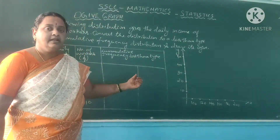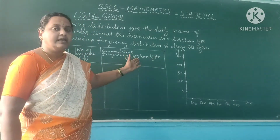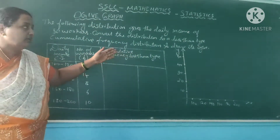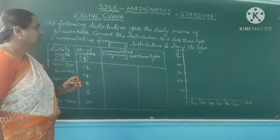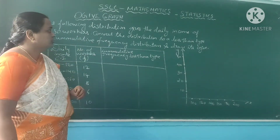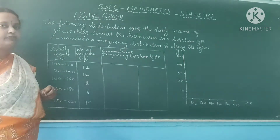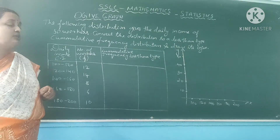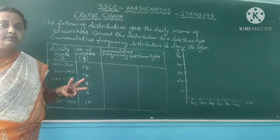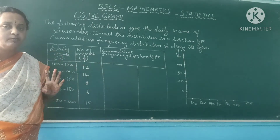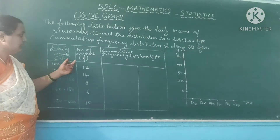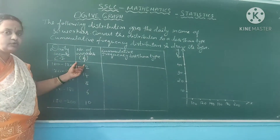Today I am going to explain how to draw a less than walker graph. Let me read the question once. The following distribution gives the daily income of 50 walkers. Convert the distribution to a less than cumulative frequency distribution and draw its walker. This is a very important question — you will be getting a 3-mark guaranteed question in your board paper. The first column is nothing but the class interval and the second column is the frequency.